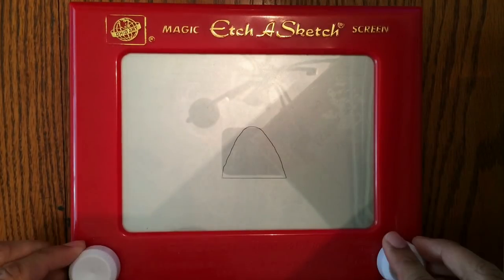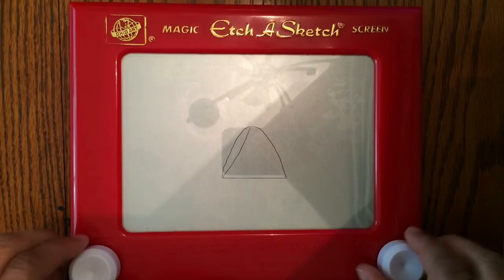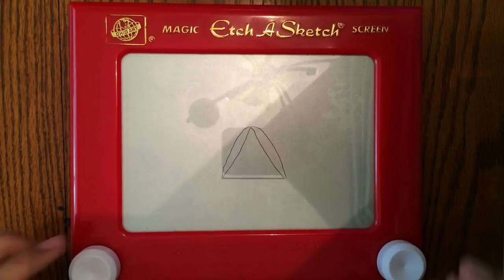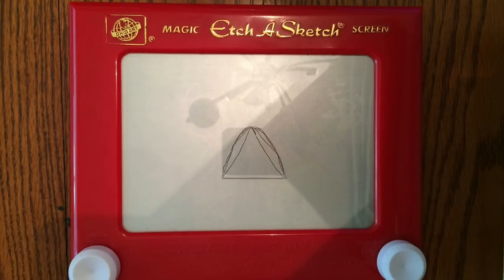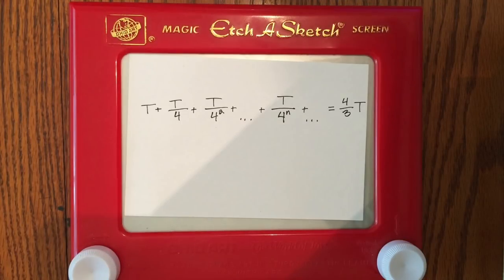He sought to find the area under a sector of a parabola, and he did so by inscribing a triangle within it that had the same base and height as the sector. Then he added the areas of smaller and smaller triangles onto infinity, and by doing this he was able to find that the area under the parabolic sector is four-thirds the area of the large triangle.